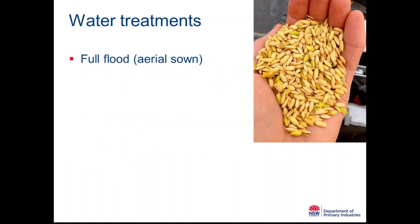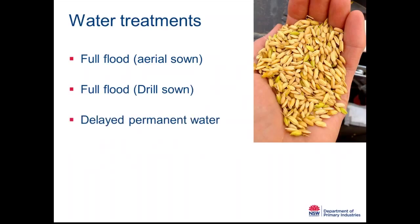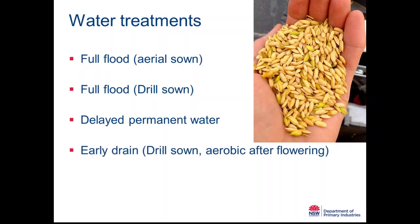For water treatments: the first is a fully flooded system where the rice is aerially sown with no cultivation after initial bed preparation. We then have full flood drill sown, where rice seed is drill sown into the paddy before flooding. Delayed permanent water is a water-saving option where the field is left longer before flooding up. And early drain, where the field is drill sown but drained after flowering and grown aerobically after flowering, whereas normally the paddy would be left full.